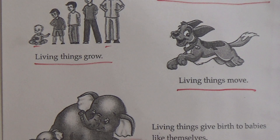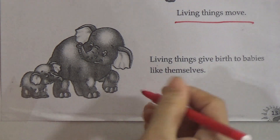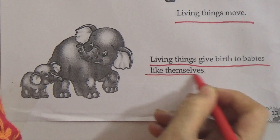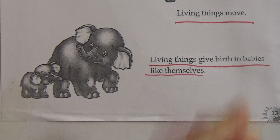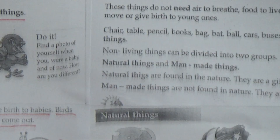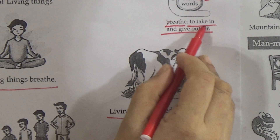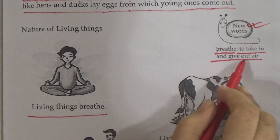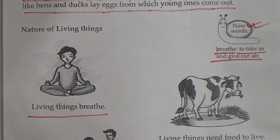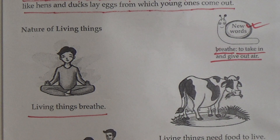Living things give birth to babies like themselves. See this figure — there is an elephant and a baby elephant. These are examples of that. Now see here — there is a new word: 'breath.' What is the meaning of breath? Breath means to take in and give out air. Memorize this word meaning properly.